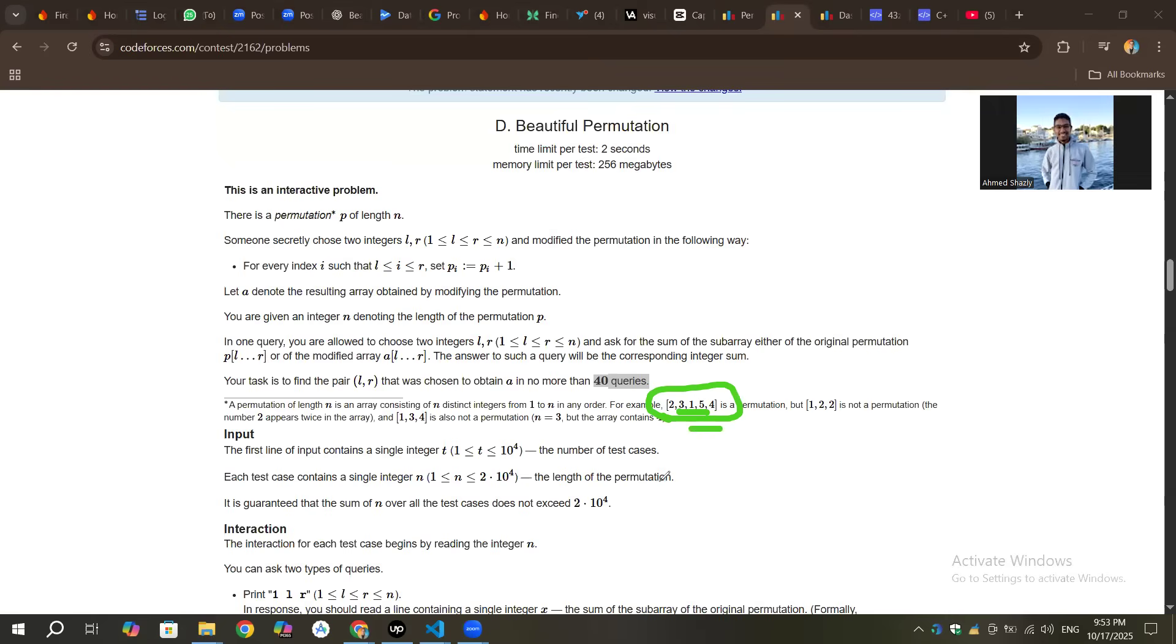And then he will add one to all of them. For example, for these ones if he choose the range which contains 3, 1, 5, it will look like that: 2, 4, 2, 6 and 4, because these ones are the L and R he chose.